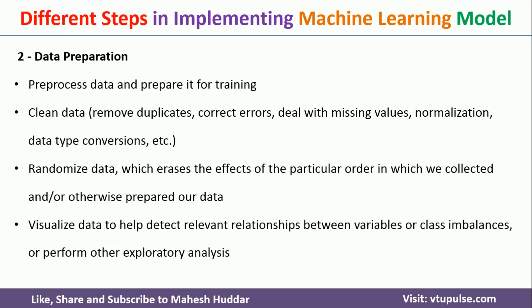Another very important step in data preparation is visualizing the data, so that you can understand the relationship between variables as well as class imbalances. If two variables are correlated with one another, there is no point in selecting both; you can select just one for analysis. If they are not related, then you should select both. Class imbalance is an important issue — if you have 100 data points and 90 belong to one class and only 10 to another, such data cannot be used to train the model effectively and must be handled.